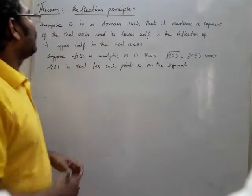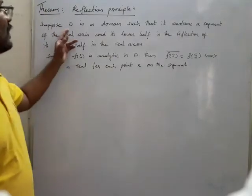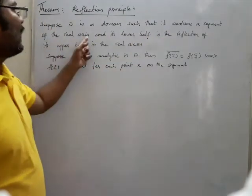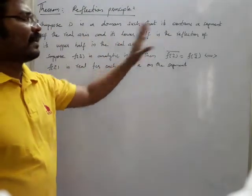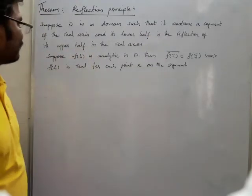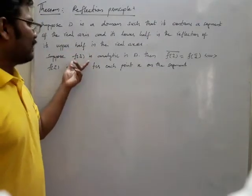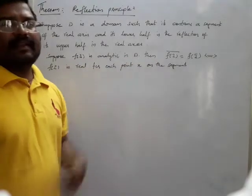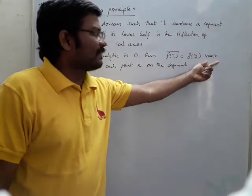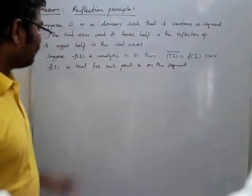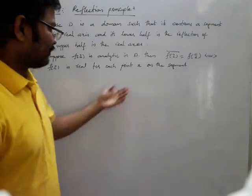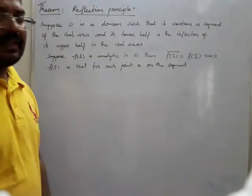Reflection Principle. Suppose D is a domain such that it contains a segment of the real axis and its lower half is the reflection of its upper half in the real axis. Suppose f(z) is analytic in D. Then f(z̄) = overline{f(z)} if and only if f(z) is real on the points x on the segment of the real axis.